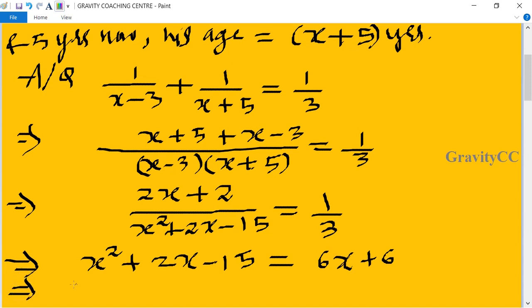Implies that x squared plus 2x minus 15 minus 6x minus 6 equal to 0.